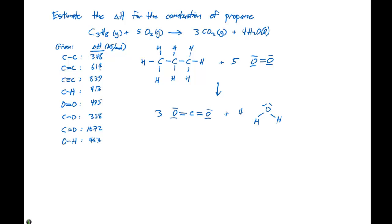So here are our Lewis structures of the reactants and products. We can estimate the delta H of a reaction by taking the sum of the bonds broken minus the sum of the bonds formed.